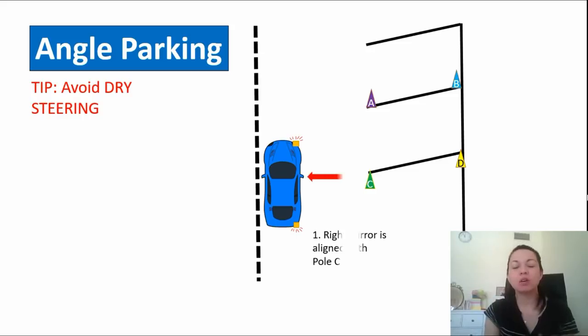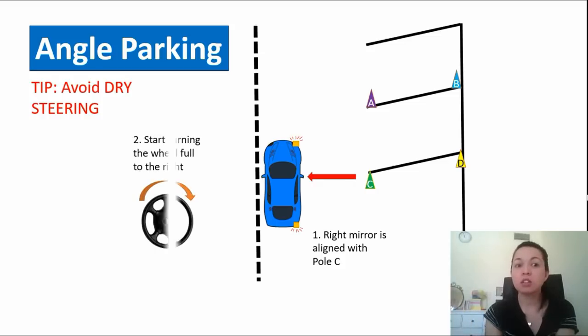Let's say that your right mirror is aligned with pole C. The distance between pole C and your car right mirror is not going to be near, it's a little bit far. Just try to gauge if you can see pole C on your right side.